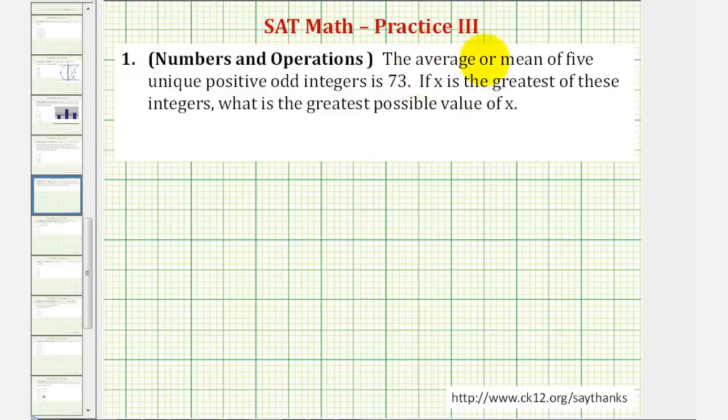To start, to find the average or mean of five numbers, we would have to find the sum of the five numbers and then divide by five. But in this case, we have unique positive odd integers that have an average or mean of 73.